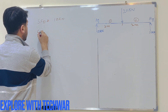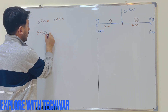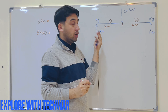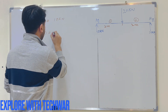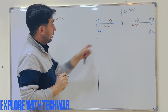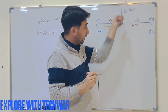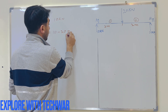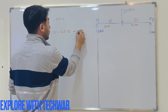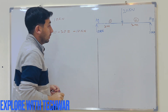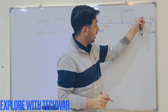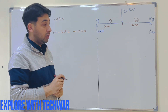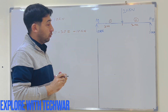For shear force at point 2, we again sum all forces on the left side. We have 10 kN acting upward and the 20 kN force acting downward, which is negative. So: 10 minus 20 = minus 10 kN. The shear force at point 2 is -10 kN. At point 1 it is +10 kN, so now we know both shear forces.